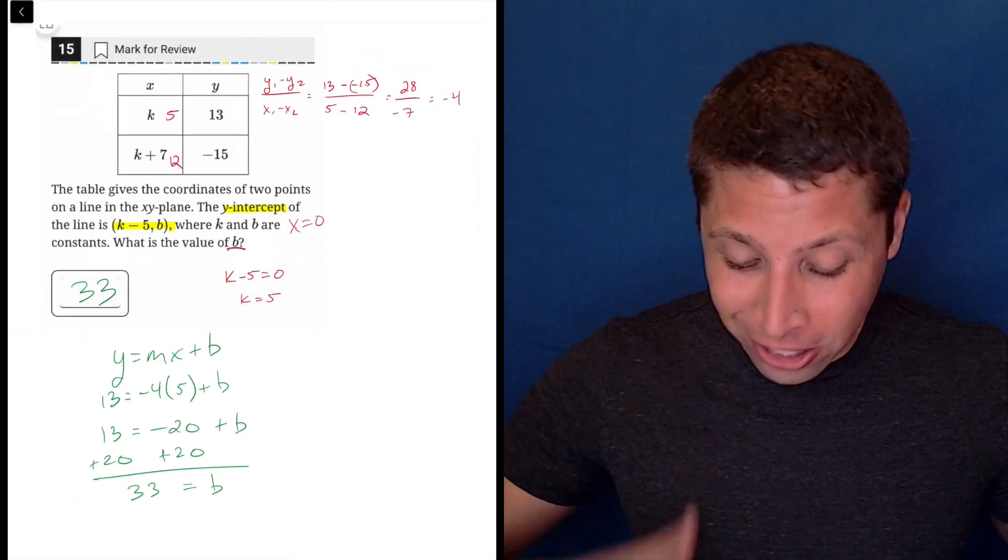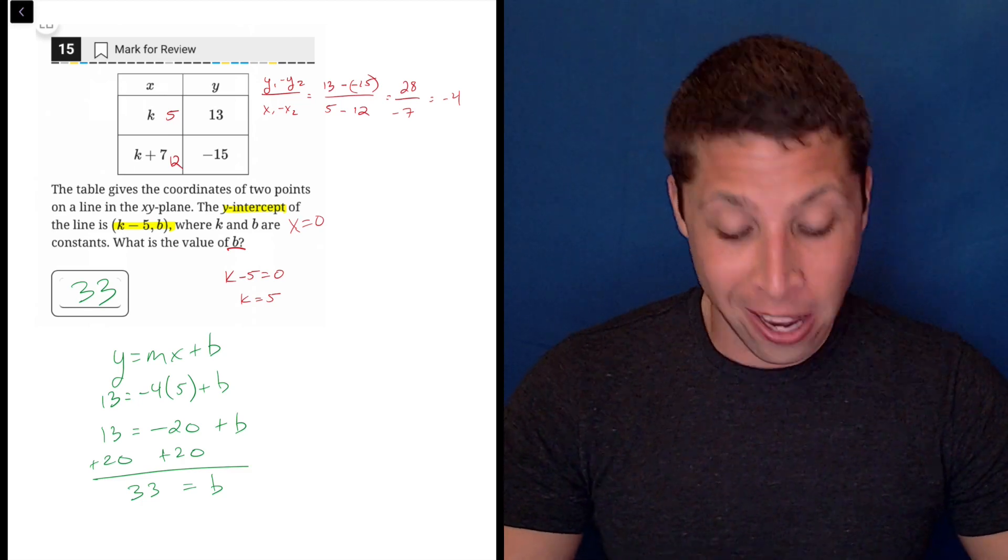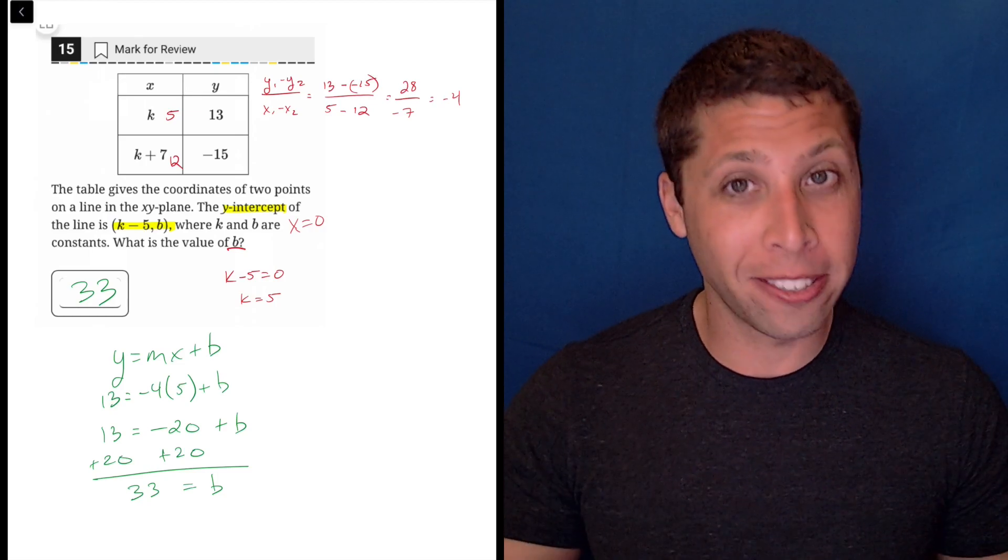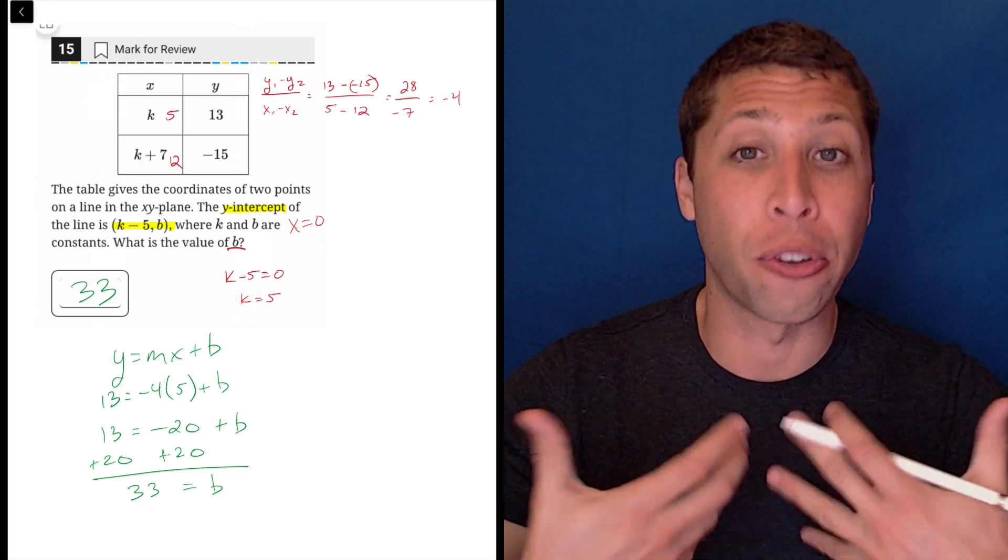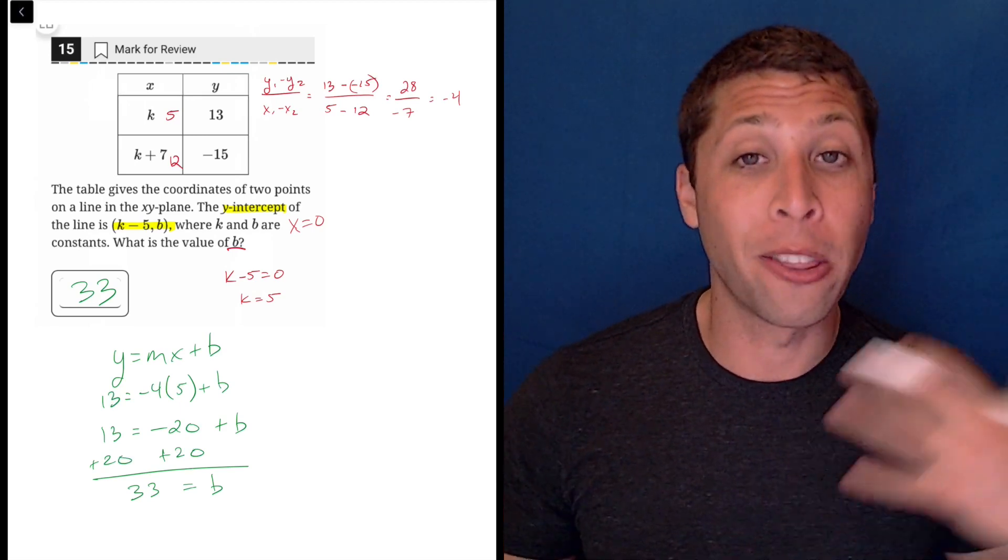So the reason I like this question is it kind of takes us on a full tour of everything you need to know for lines, right? We have y equals mx plus b, that's kind of our anchor. We're going to use that in a lot of cases because that's the version of a linear equation that is the most understandable, the most informative, and it's composed of two main parts, right? The slope and the y-intercept.